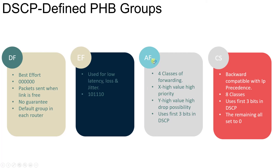Assured Forwarding uses the notation AF xy, with four different forwarding classes. The x value defines priority — a higher x value means higher priority. The y value defines the dropping probability — a higher y value means the packet has a higher probability of being dropped. Assured Forwarding uses the first three bits of the DSCP field and is the most commonly used method in per-hop behavior groups.